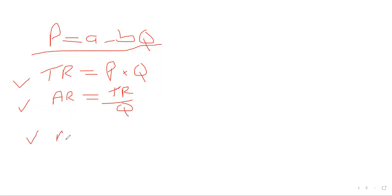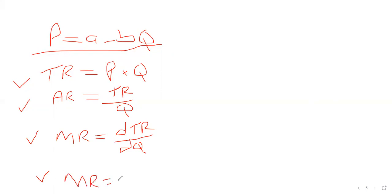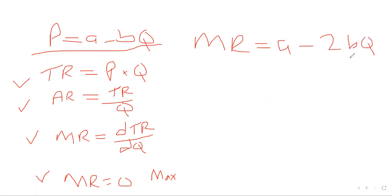The third thing is marginal revenue — we differentiate the total revenue. The fourth thing: when marginal revenue equals zero, we find the highest or maximum point. The fifth thing is a shortcut for marginal revenue. Now our marginal revenue covers five key points.